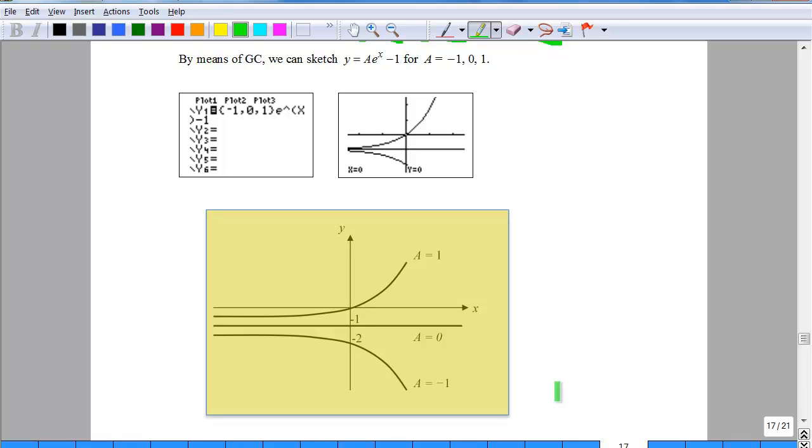How do you sketch the 3 graphs together at the same time using your GC? Please take note of how the syntax of the GC is being done. We use this curly bracket to denote the different values of a as the coefficient of the exponential graph e^x. When you want to present the particular family of curves, what you need to do is sketch the graph and then label a = 1 for the first solution curve, a = 0 and so on, a = -1.